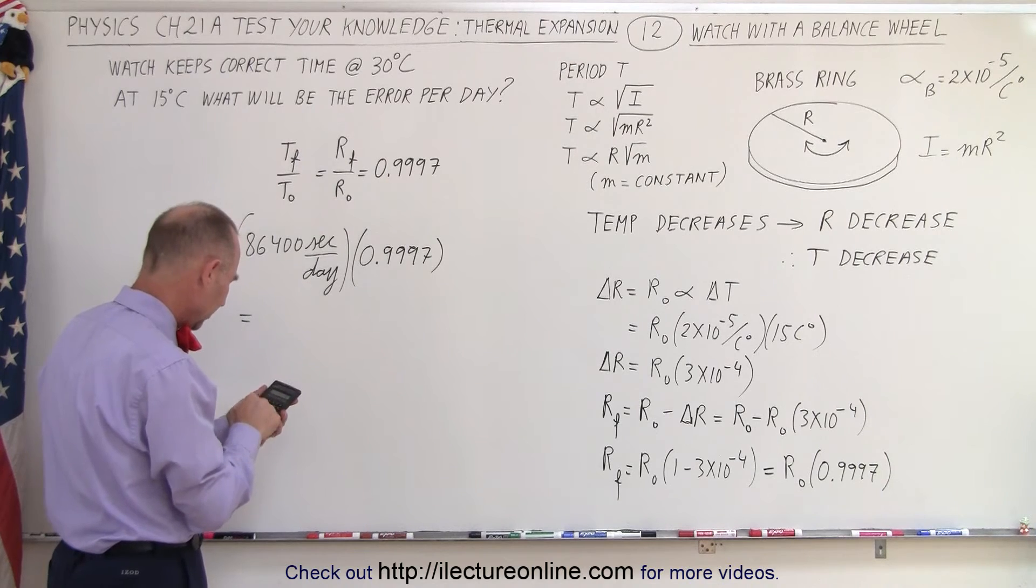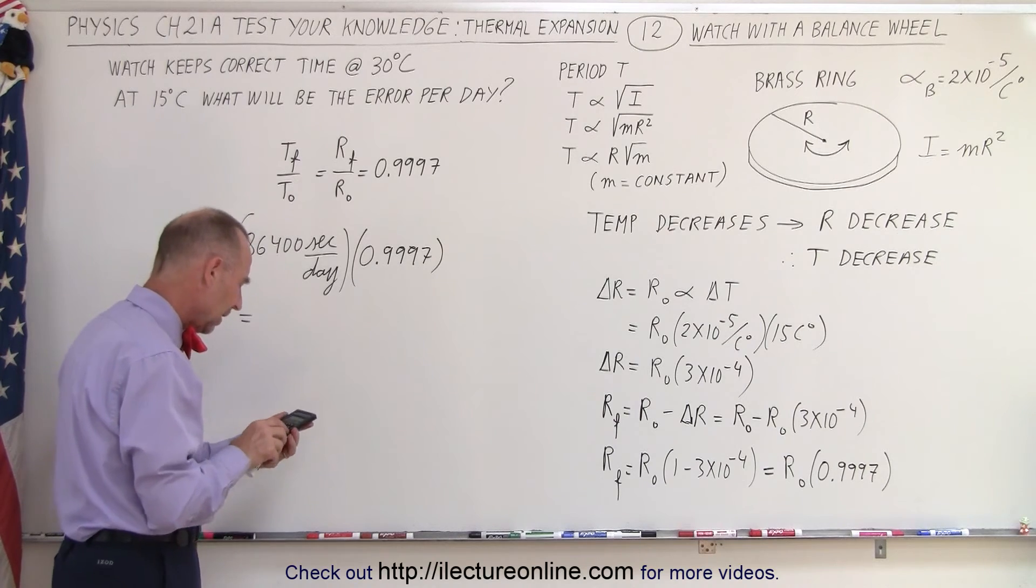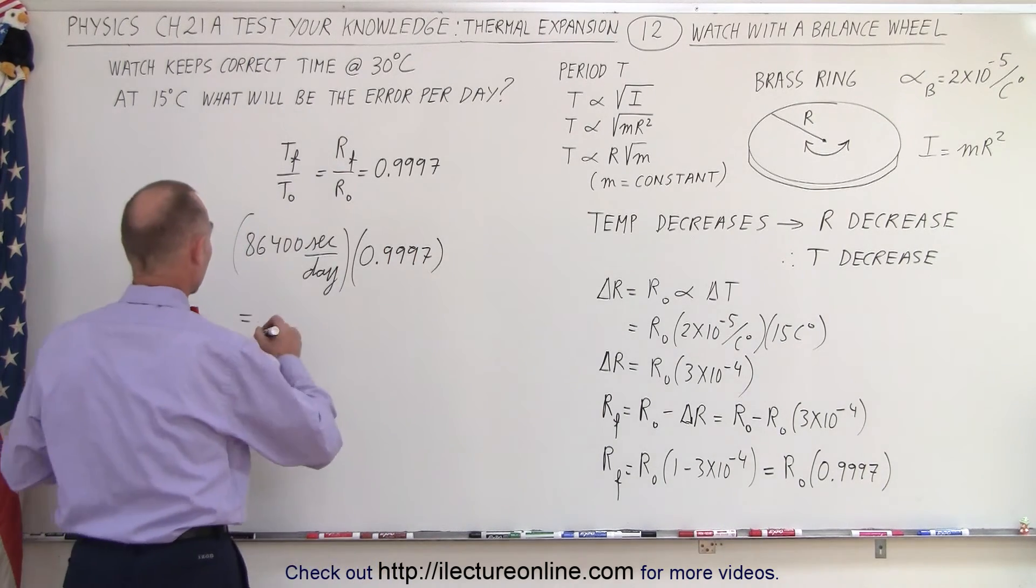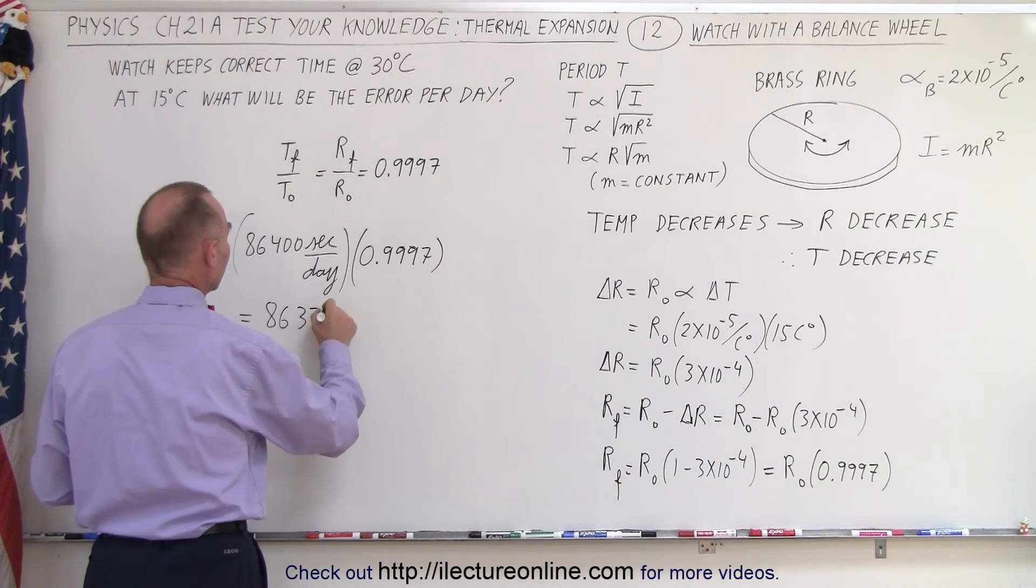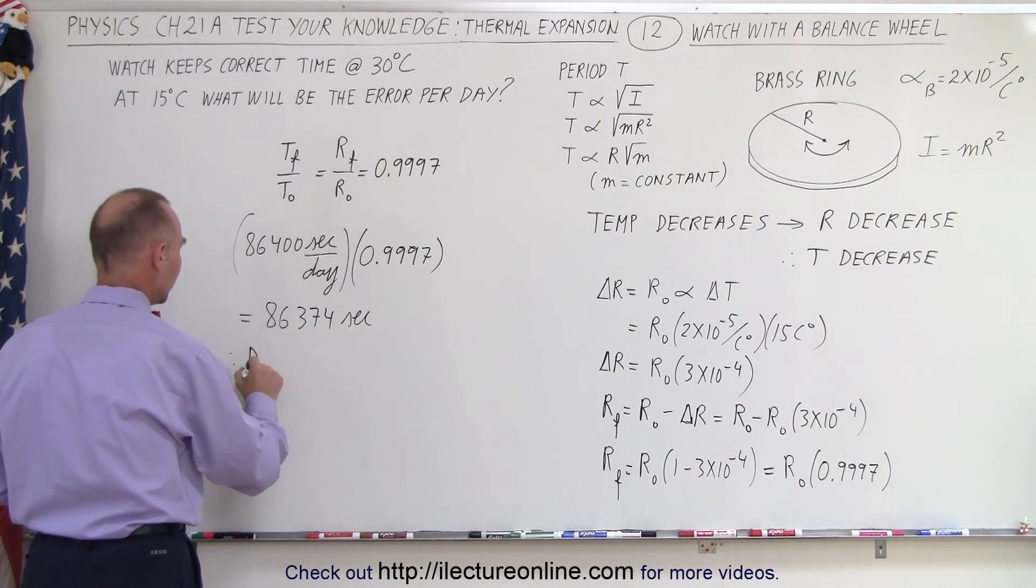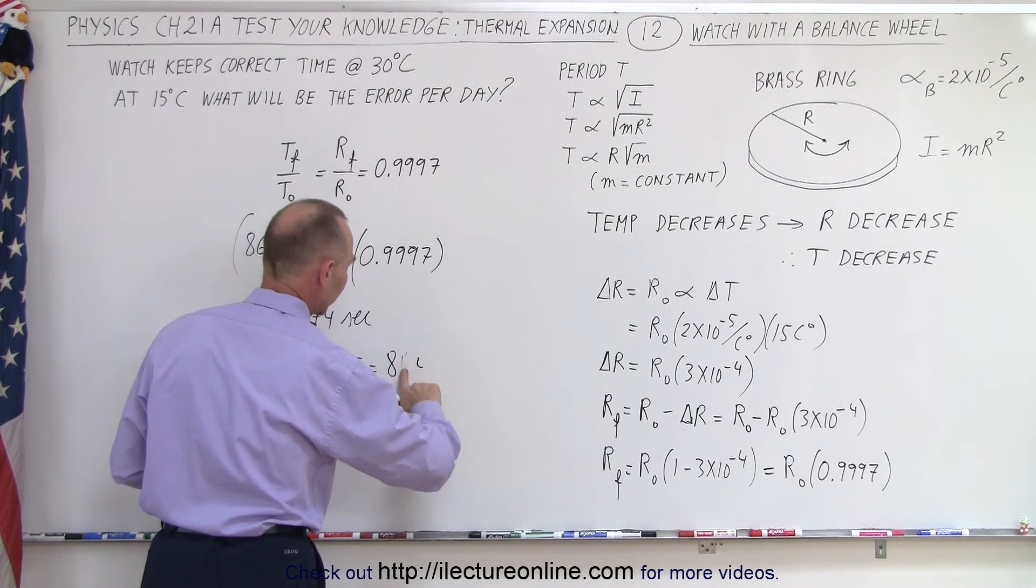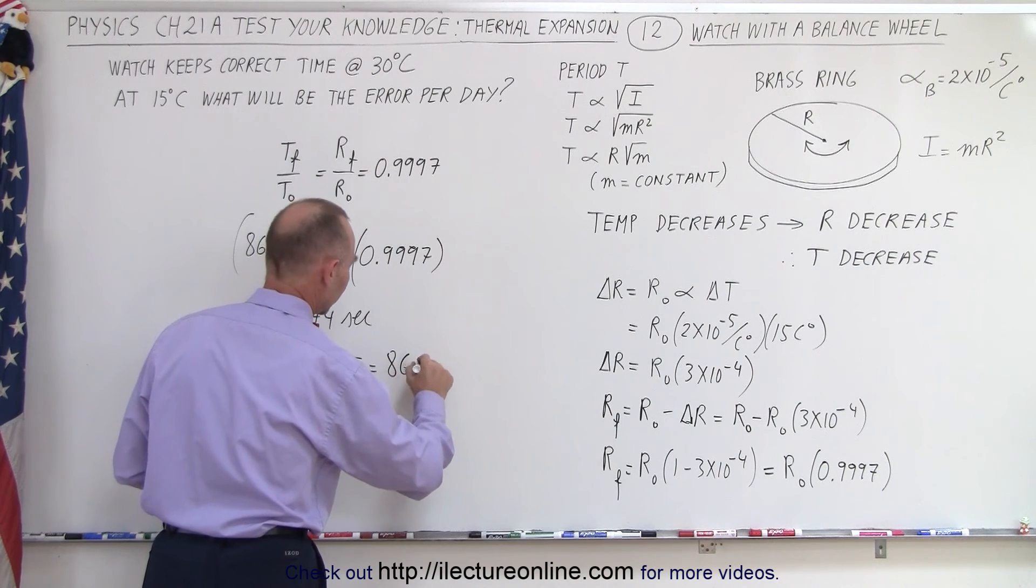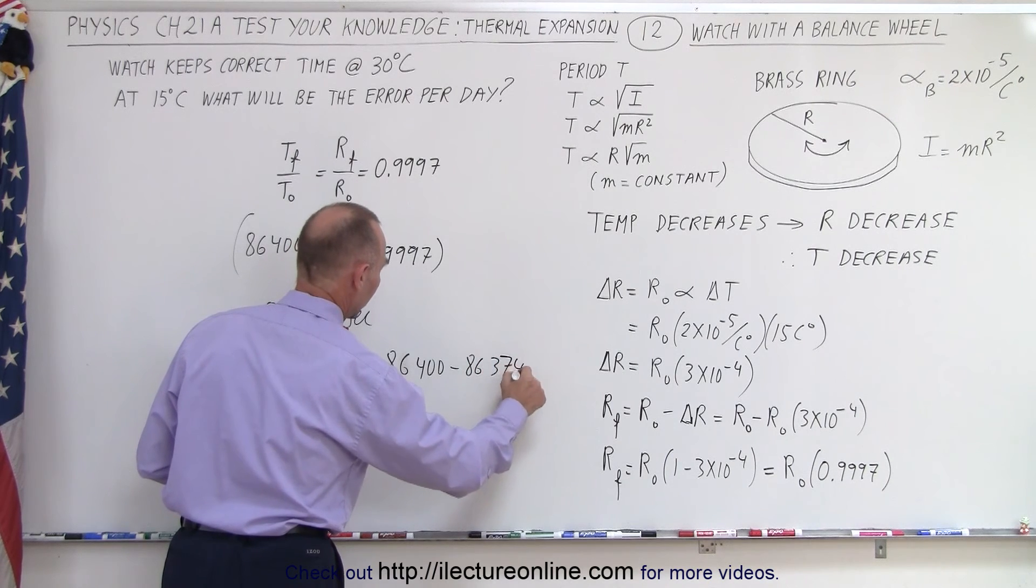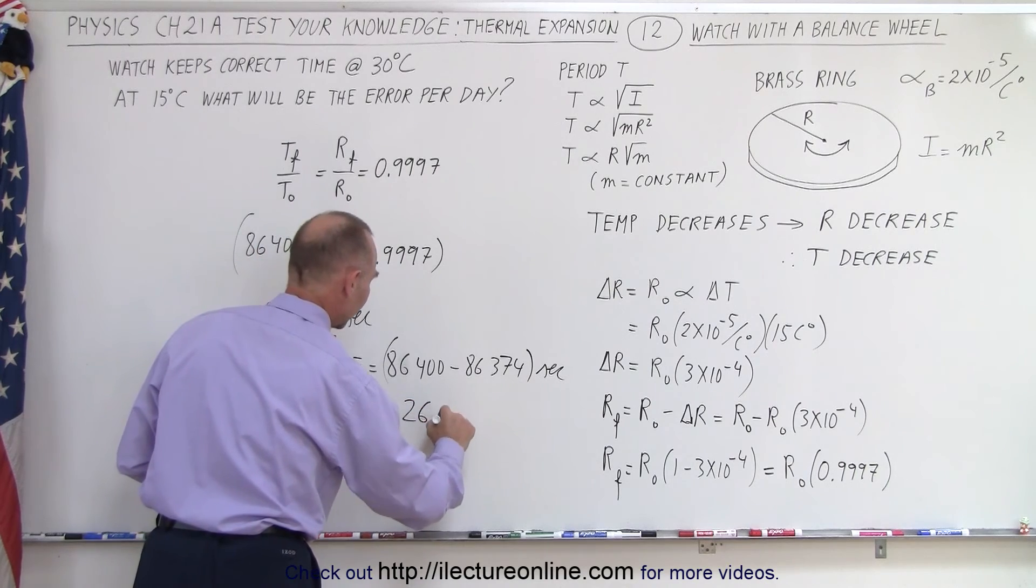So 86,400 times 0.9997 equals 86,374 seconds. So 86,374 seconds. Notice that the delta time is equal to 86,400 minus 86,374. That, of course, would be in seconds. That would be equal to 26 seconds.